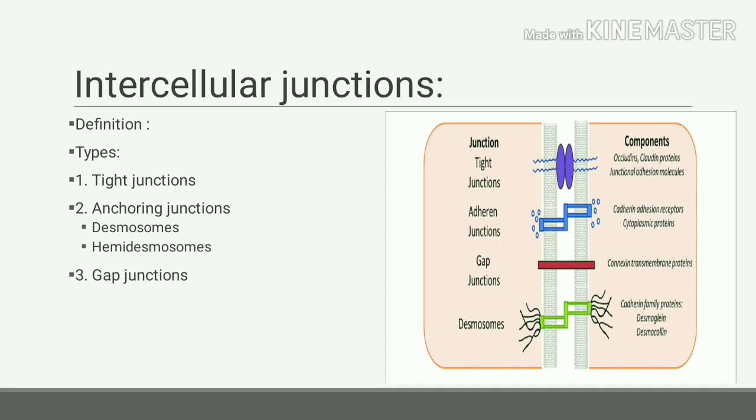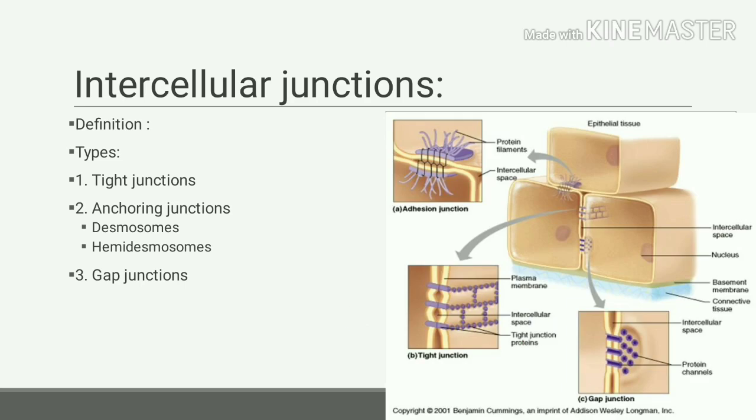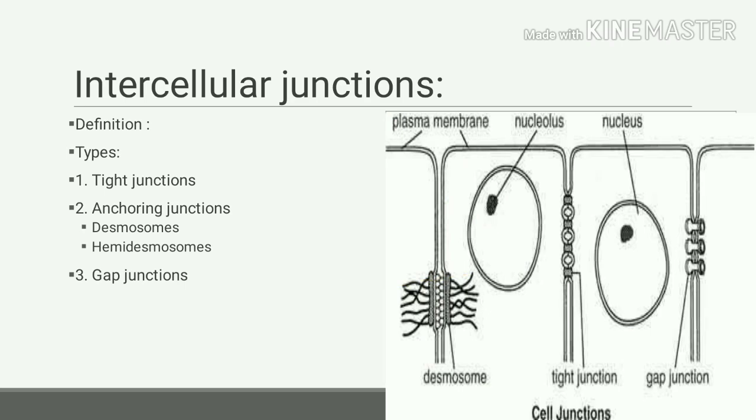Number one is tight junctions, number two is anchoring junctions which are further divided into desmosomes and hemidesmosomes, and number three is gap junctions. Here you can see in the diagram various types of intercellular junctions.